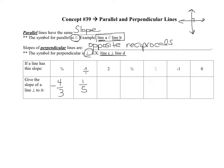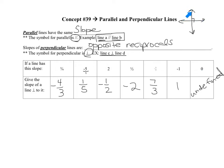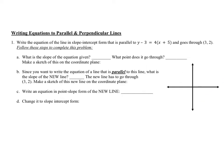Stop the video and try the next five on your own, then tune back in. The first four were probably fine, but don't forget that a slope of zero is a horizontal line. Something perpendicular to that would be a vertical line, and the slope of vertical lines is undefined.